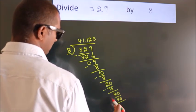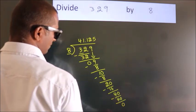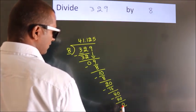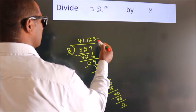Now we subtract. We get 0. Here we got remainder 0, so this is our quotient.